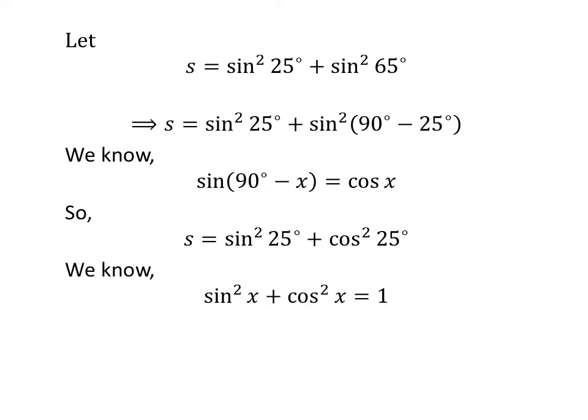We know the trigonometry identity sin²x + cos²x = 1. So, application of the above identity gives us s = 1.